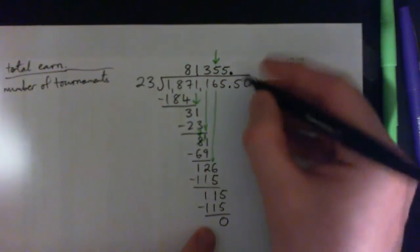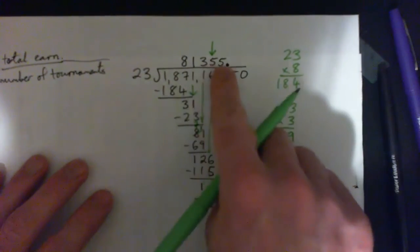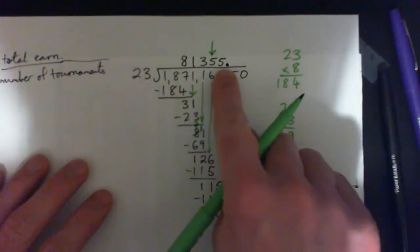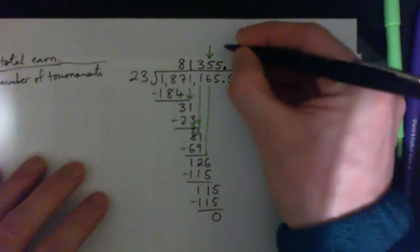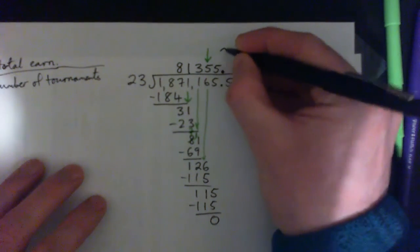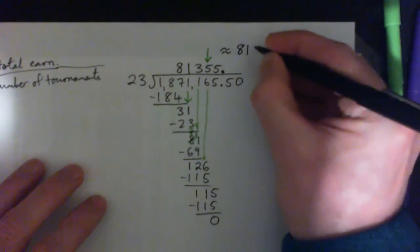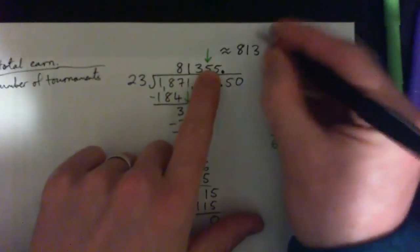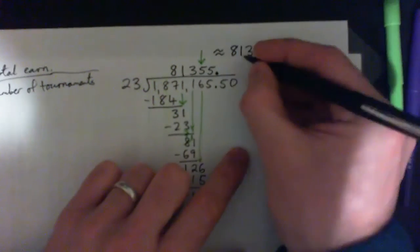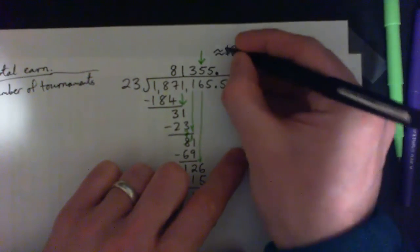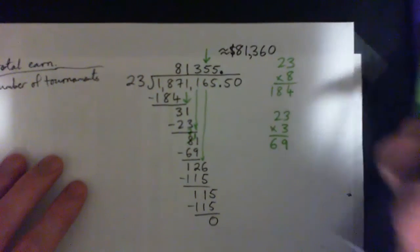And we can stop here. Because remember, it said just round to the nearest $10. So we're good to go as far as the nearest dollar. And do we round up or down now? We round up. So 8, 1, 3. And the 5 goes up to a 6. And then 0. Because that's the nearest $10. So 81, 360. 81, 360.